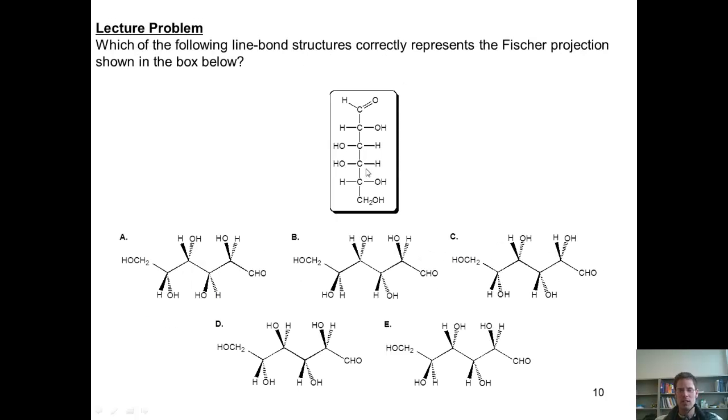This is my last example, which is clearly the most difficult one in our pile. Which of the following line bond structures of these five correctly represents the Fischer projection shown here in this box?